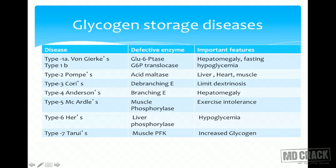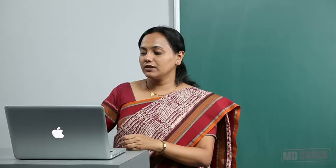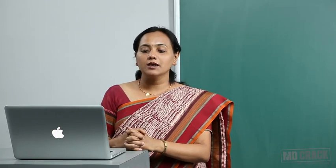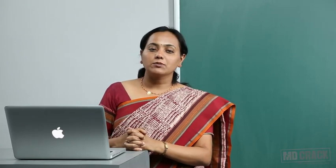The key enzymes to remember for MCQs are: Type 1a — glucose-6-phosphatase; Type 1b — glucose-6-phosphate translocase; Type 2 — acid maltase; Type 3 — debranching enzyme; Type 4 — branching enzyme; Type 5 — muscle phosphorylase; Type 6 — liver phosphorylase; Type 7 — muscle phosphorylase. This concludes the session on glycogen storage diseases and glycogen metabolism regulation.